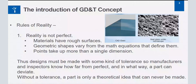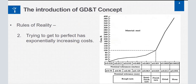The second rule of reality states that trying to get to perfect has exponentially increasing cost. Looking at the graph, the X-axis shows tolerances increasing from left to right, and the Y-axis shows the percentage increase in cost. Moving from ±0.03 to ±0.015 to ±0.01 to ±0.001, there is a fair increase in manufacturing cost up to 100%. But when we try to decrease tolerance values further towards perfection, the cost of manufacturing increases exponentially.